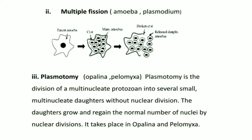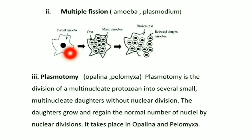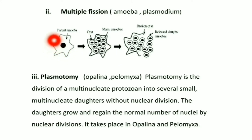Multiple fission is a type of asexual reproduction in which the nucleus undergoes repeated division before the cytoplasm breaks to form a number of uninucleate daughter cells.